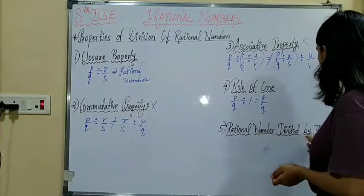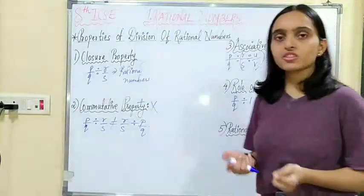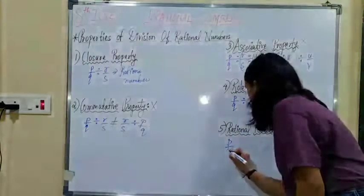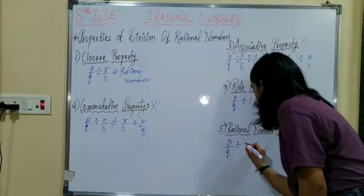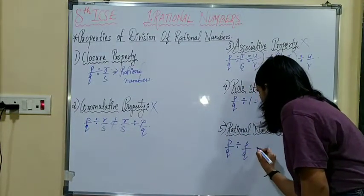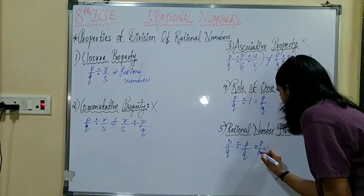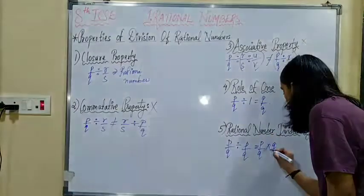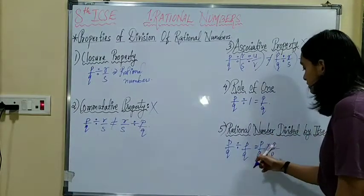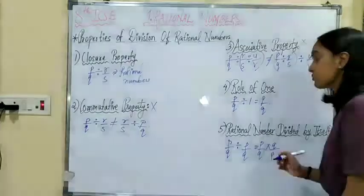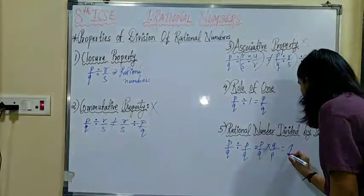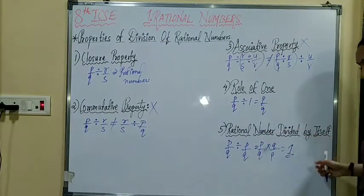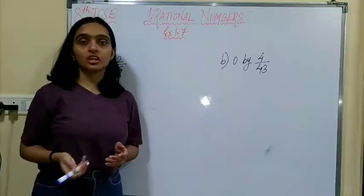Rational number divided by itself: when any rational number is divided by the same rational number again, that is P upon Q divided by P upon Q, it means P upon Q is multiplied by its reciprocal Q upon P. The Q's cancel and the P's cancel, so the answer is 1. That is, a rational number when divided by itself gives 1 as the answer.